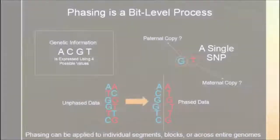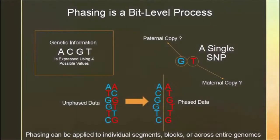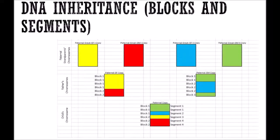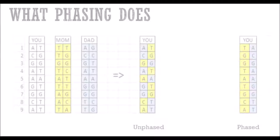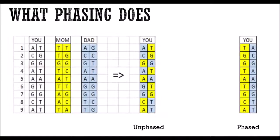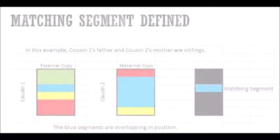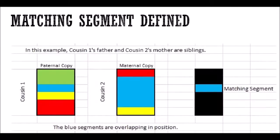Intermediate users learn to successively apply Borland Genetics' four-step reconstruction method to solve any DNA reconstruction problem: one, phase; two, map; three, extract; four, merge.